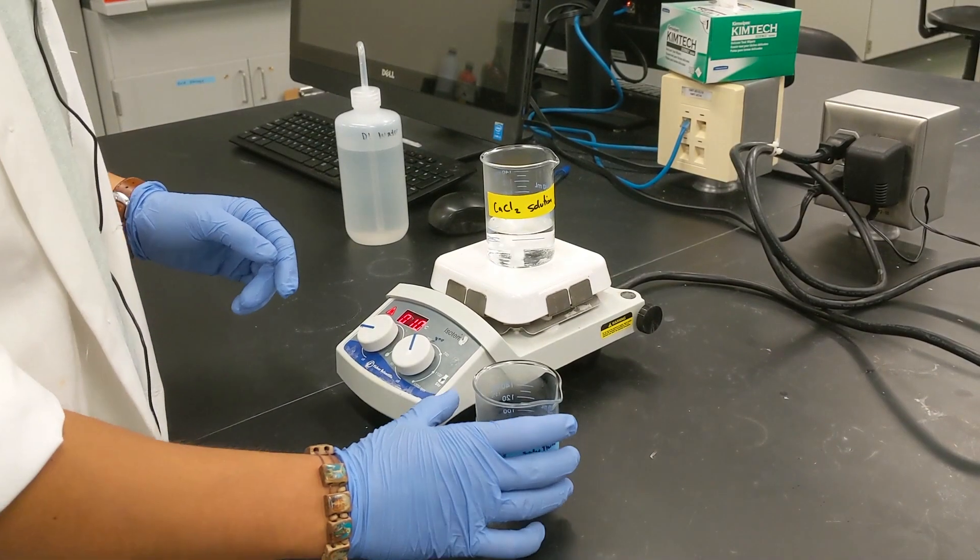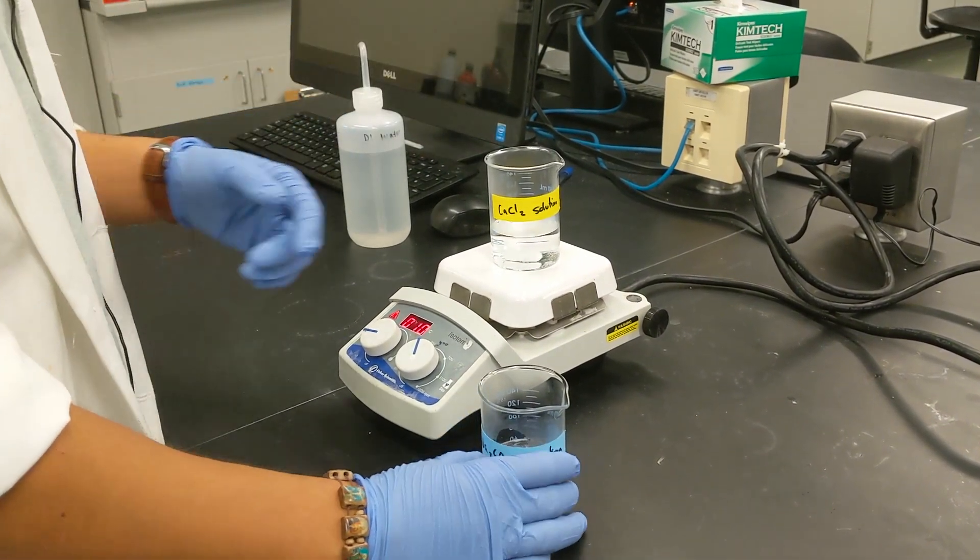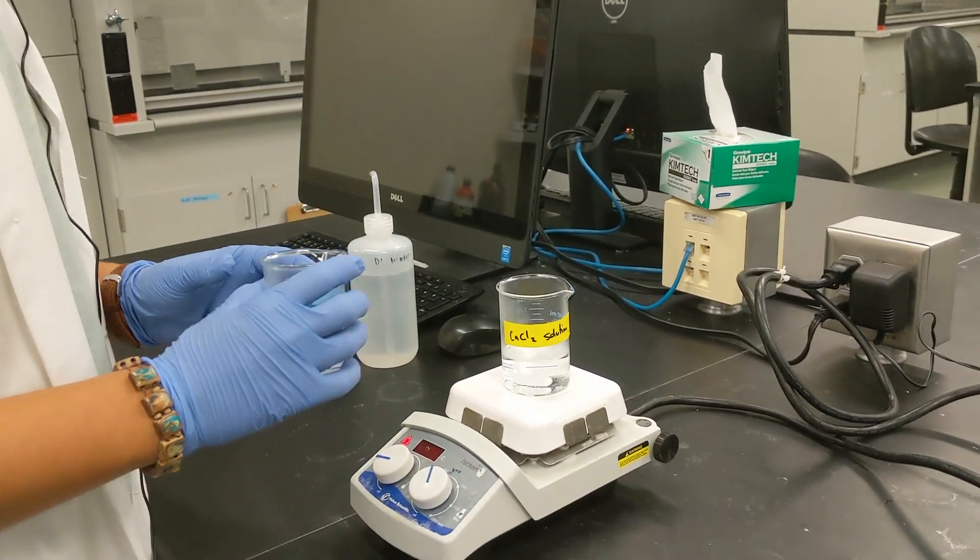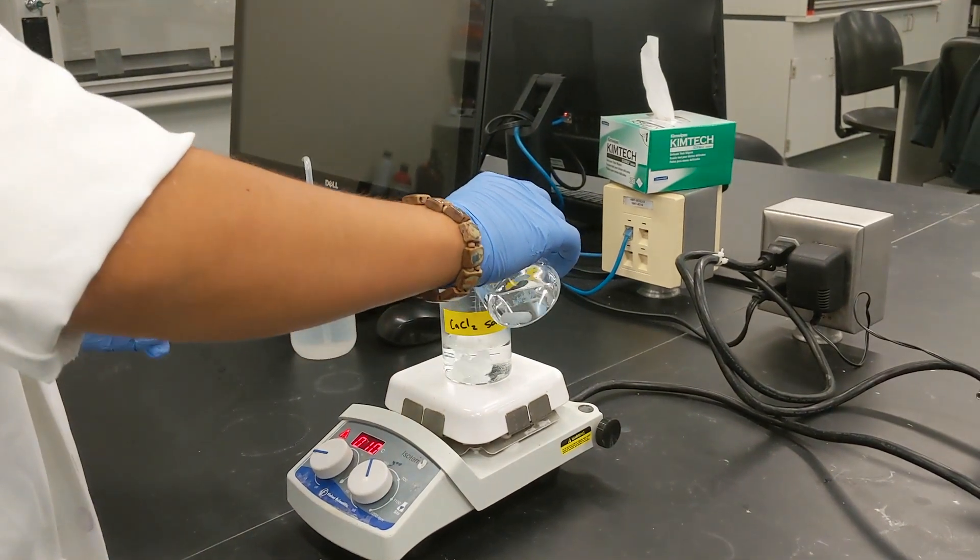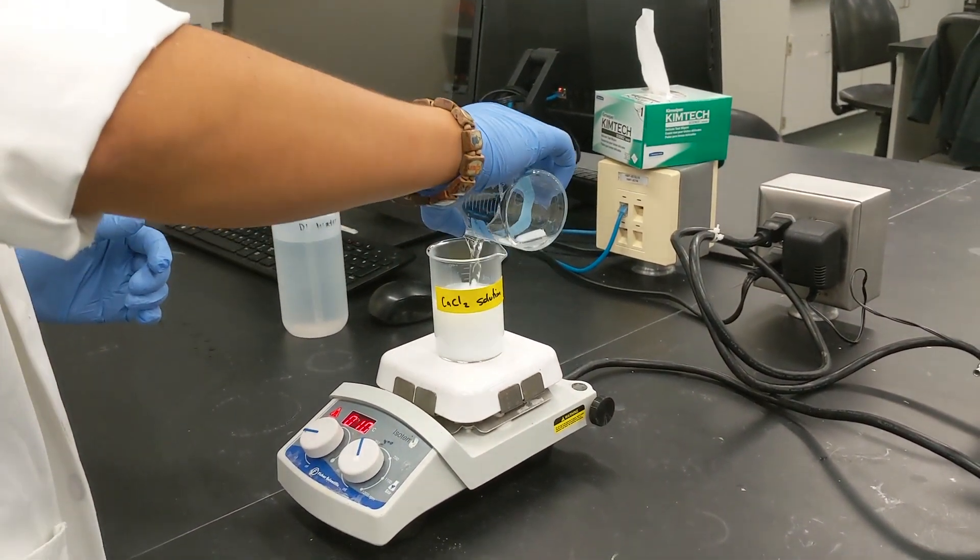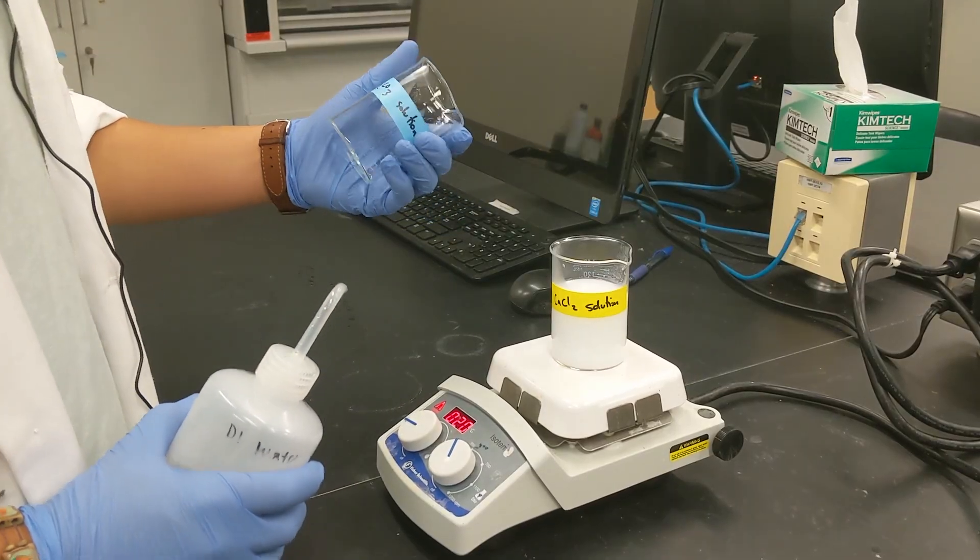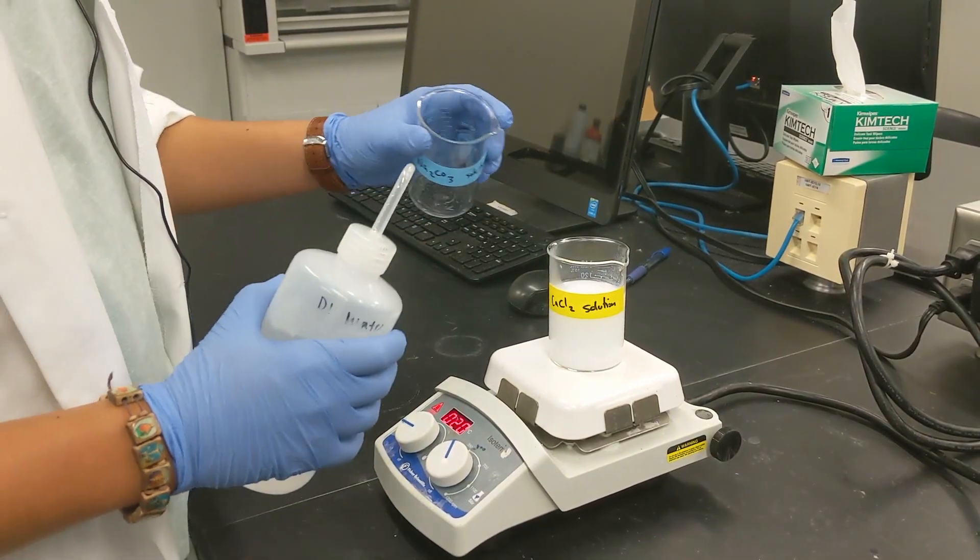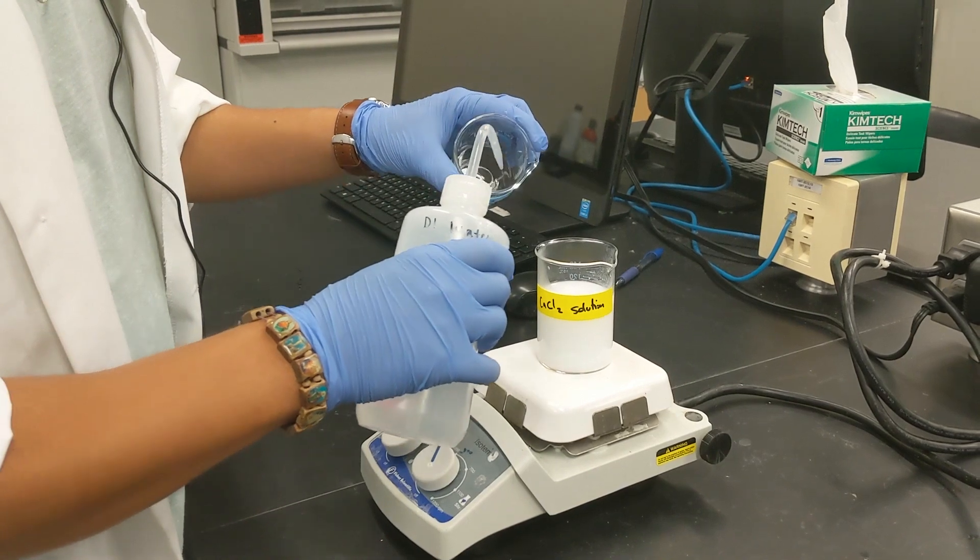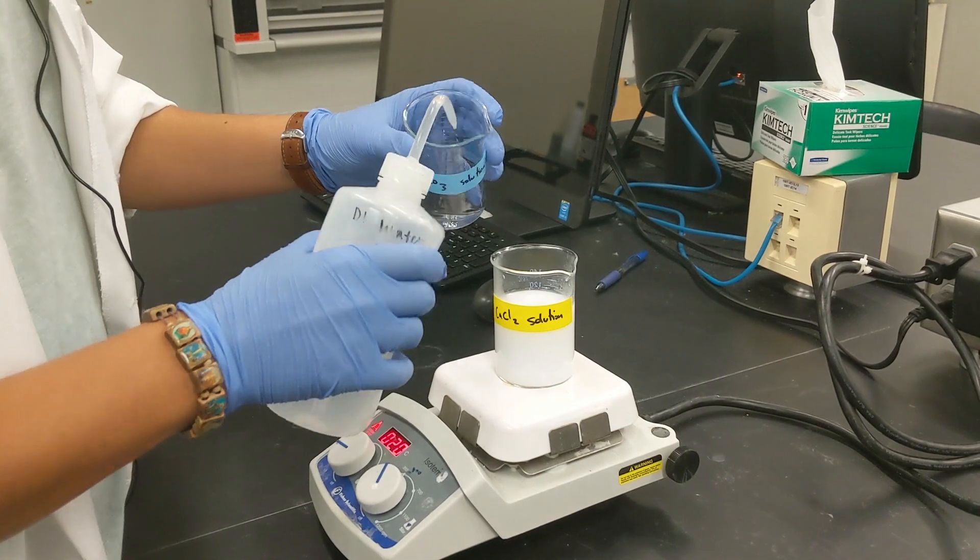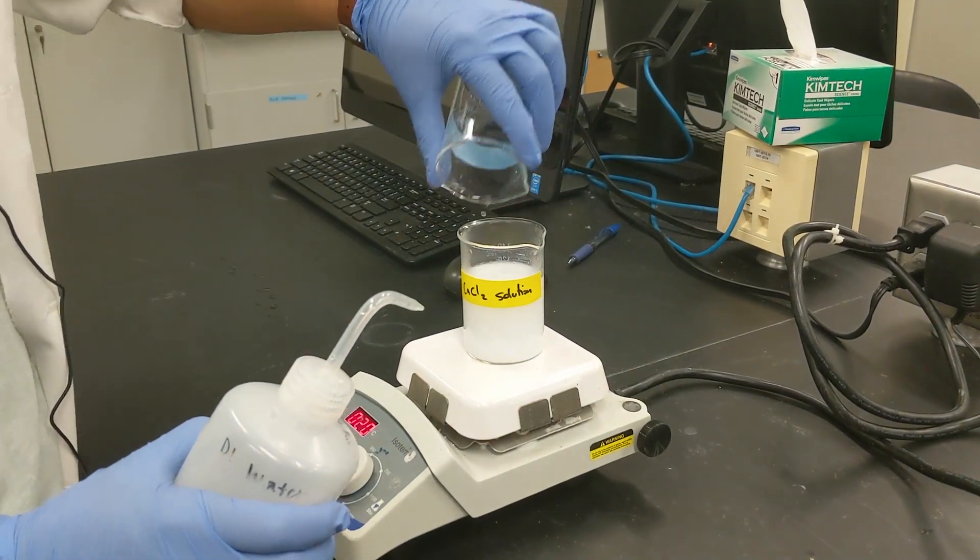So now our calcium chloride solution is finished dissolving. Our sodium carbonate solution is also finished so we're going to combine the two to form our precipitant. Make sure that all of the sodium carbonate got into the solution, we're going to rinse out the walls of it with some distilled water and then transfer that as well.